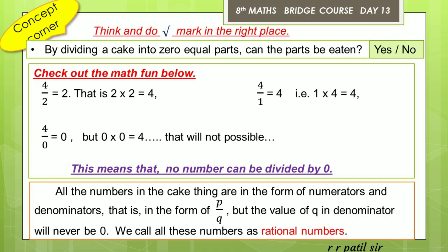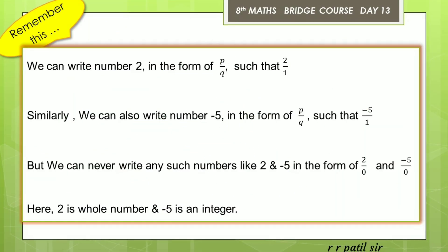Remember this: we can write the number 2 in the form of P upon Q as 2 upon 1. Similarly, we can also write minus 5 in the form of P upon Q as minus 5 upon 1. But we can never write these numbers as 2 upon 0 or minus 5 upon 0. Here, 2 is a whole number and minus 5 is an integer.